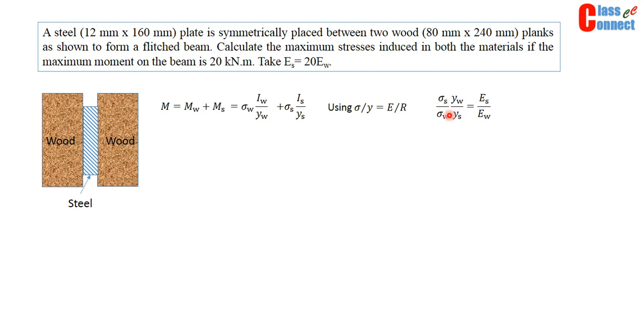We can substitute these values. So here I_W, there are two sections, so I_W is twice 80 like this. And I_S, this is the steel section, moment of inertia of the steel section.